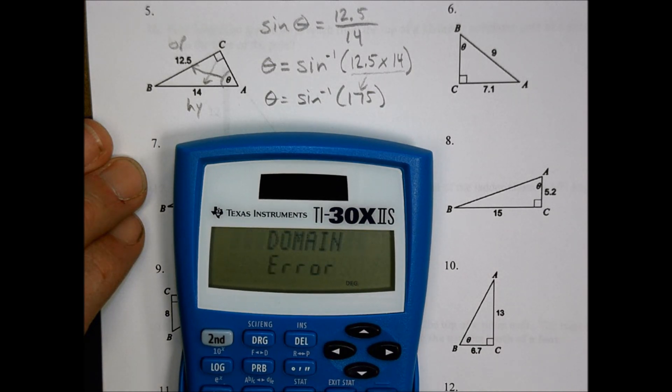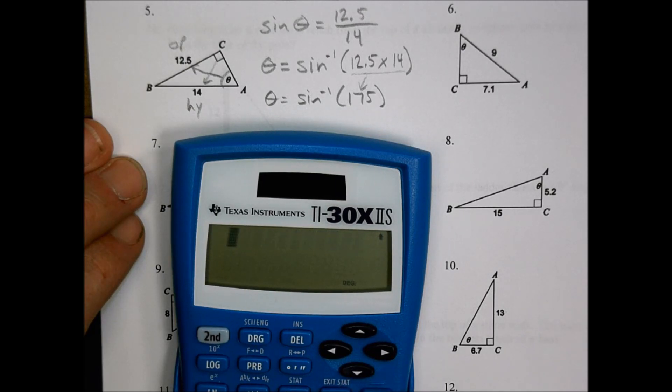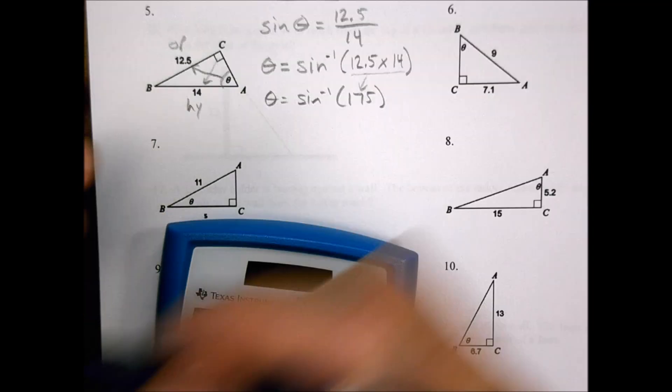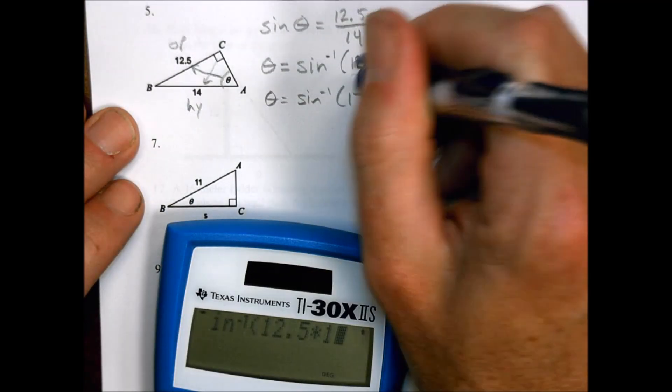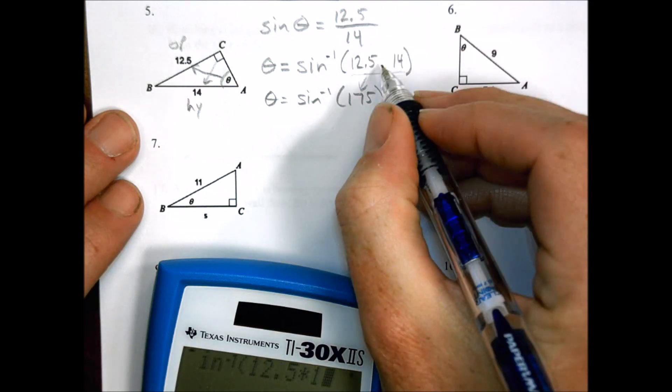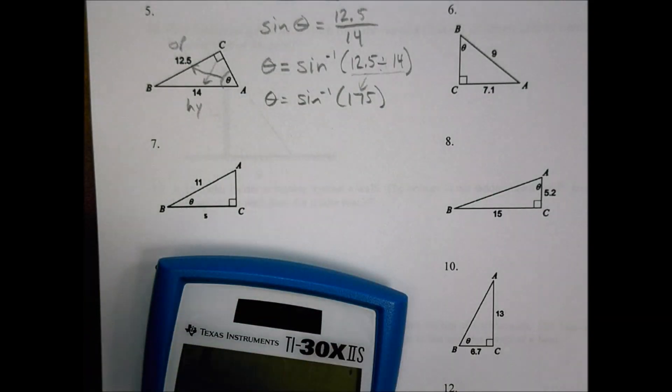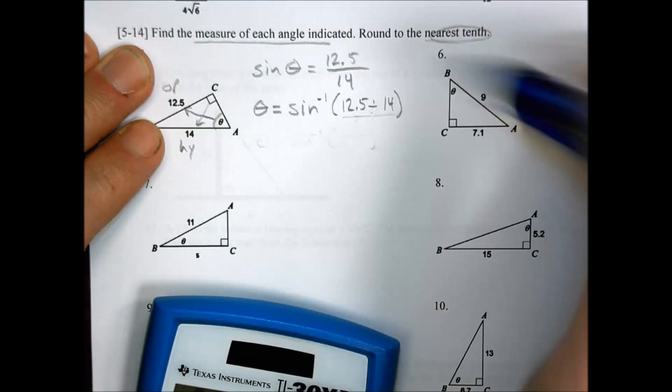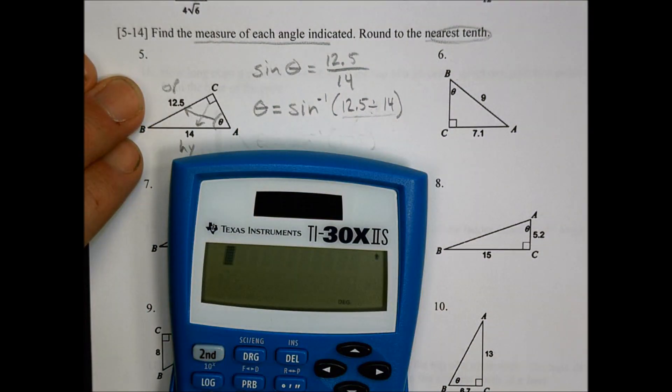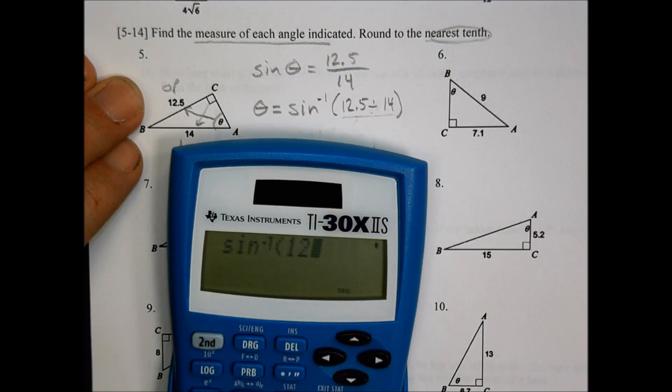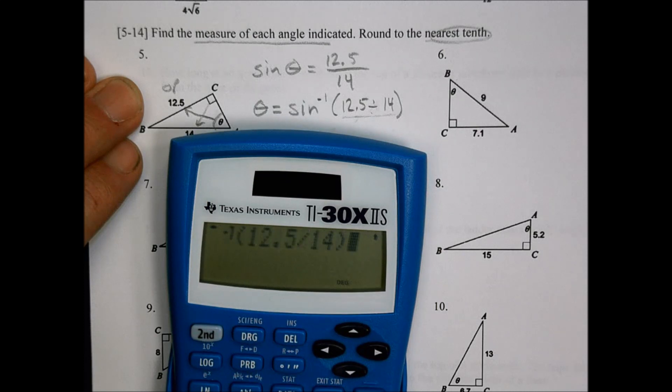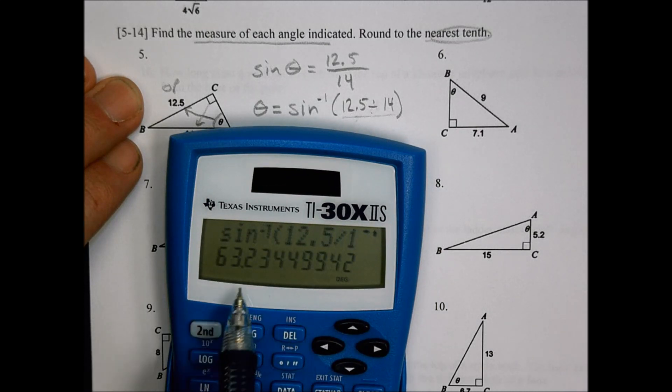Awesome. So let's try this again. Oh, domain error. What are we doing here? Let's try this again. Second sine, and we have 12.5 times 14. Oh, it's not times 14. It's divided by 14. Sorry about that. So let's do divided by 14. My mistake. Divided by 14. Let's back this up here a little bit. I got ahead of myself. Sorry. I'm going to erase this. You make mistakes sometimes. That's okay. Let's just do it like it's written. So I'm going to do a second sine and we'll do 12.5 and we're going to divide that by 14. Now when I press equals, I end up with 63.2. So that's my theta. My theta equals 63.2.